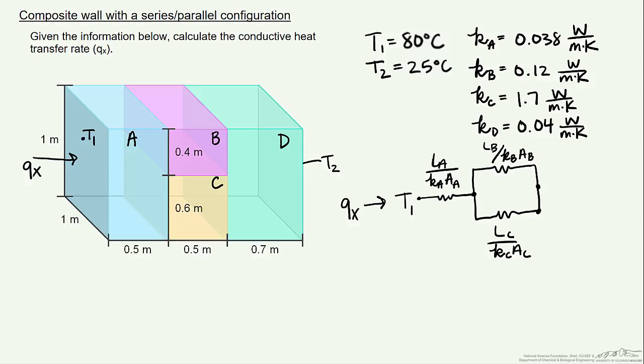Then we end up coming through our final part of the wall that we'll call D, and it has its own conductive resistance. And then the end of our thermal circuit is this T2, which is the temperature, the outside temperature of the final wall.